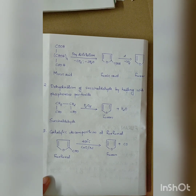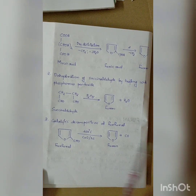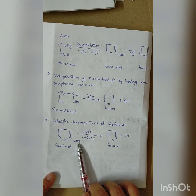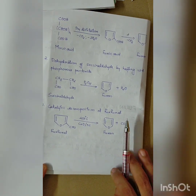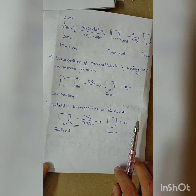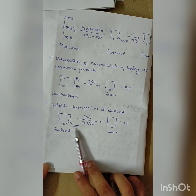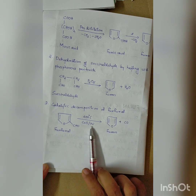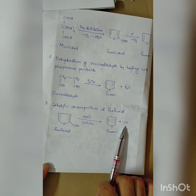The third method is catalytic decomposition of furfural. Calcium oxide is used as a catalyst. The aldehyde group at the second position is decomposed, and carbon dioxide is eliminated to yield Furan.